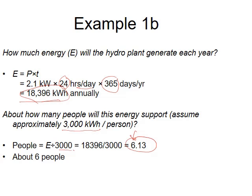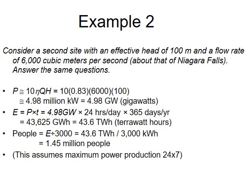Now let me modify the question. I'll use a head of 100 meters and a flow of 6000 cubic meters per second, similar to Niagara Falls. Substituting these values — efficiency, flow, and head — into the formula gives 4.98 gigawatts.